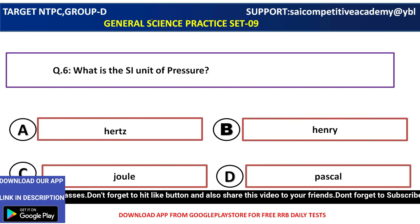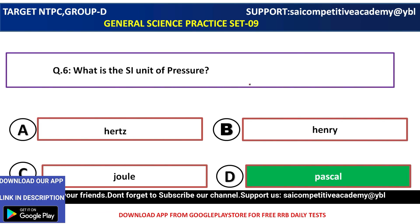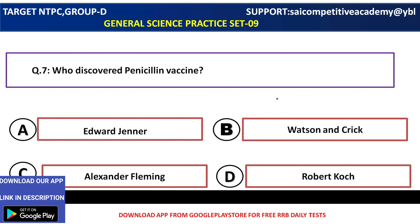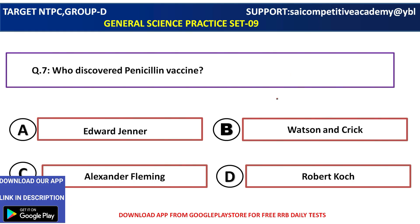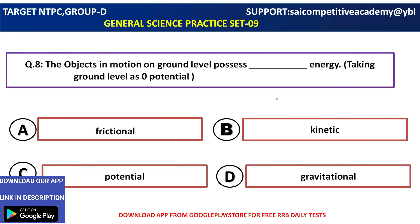What is the SI unit of pressure? Next, Alexander Fleming — Option C, Alexander Fleming. So the object in motion and ground possesses kinetic energy.